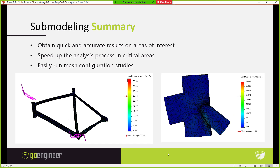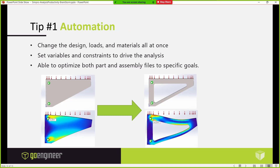Just a quick summary of the submodel: you can obtain accurate results on just the areas of interest while disregarding everything else, you can speed up the analysis in critical areas, and you can easily mesh and run several studies in a row to quickly obtain the mesh convergence point and ensure you're getting super accurate results from your mesh.